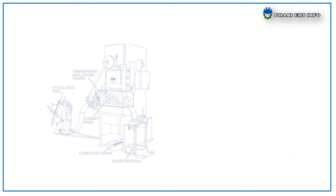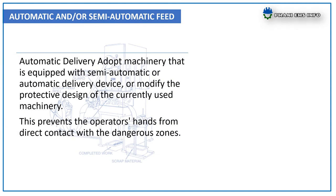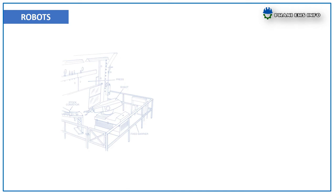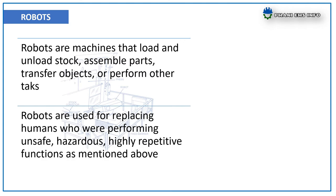Type A and B gates are commonly used with presses and are often designed to operate with each machine cycle. Automatic and semi-automatic feed — adopt machinery equipped with semi-automatic or automatic delivery devices, or modify the protective design of the currently used machine. This prevents the operator's hands from direct contact with the hazardous zone. Robots — robots are machines that load and unload stock, assemble parts, transfer objects, and perform other tasks; they are used to replace humans performing unsafe, hazardous, or highly repetitive functions.